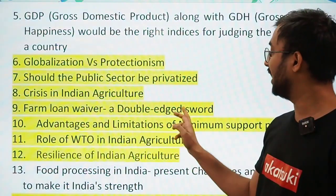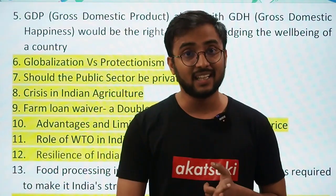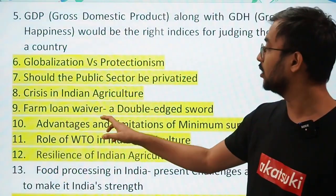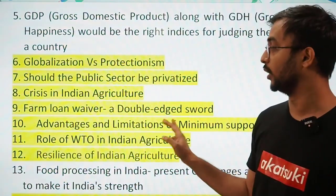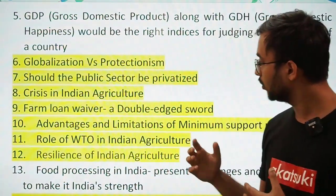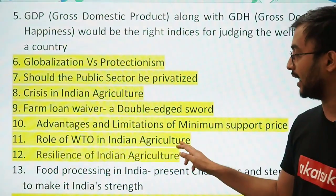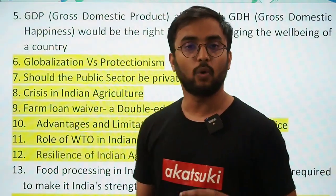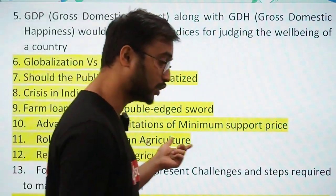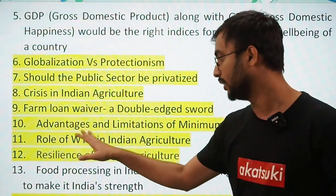Advantages and limitations of minimum support price — an agricultural mechanism essay we can expect. Role of WTO in Indian agriculture — related to subsidies, bans, the Doha Summit — a controversial and important topic. Resilience of Indian agriculture — specially mentioned because a webinar at NABARD's 40th foundation day was named 'Resilience of Indian Agriculture,' so a positive note on Indian agriculture may be asked.